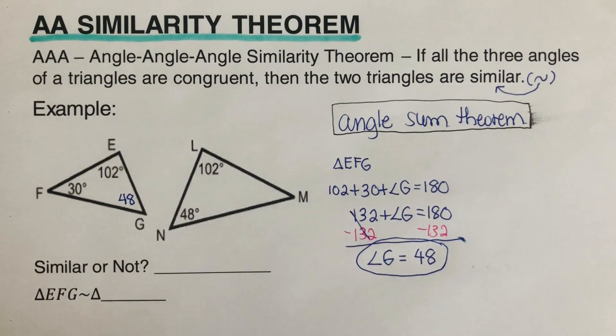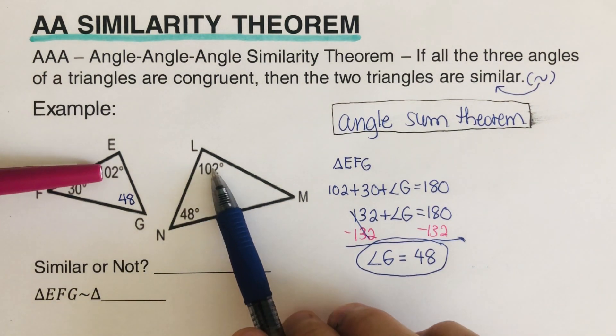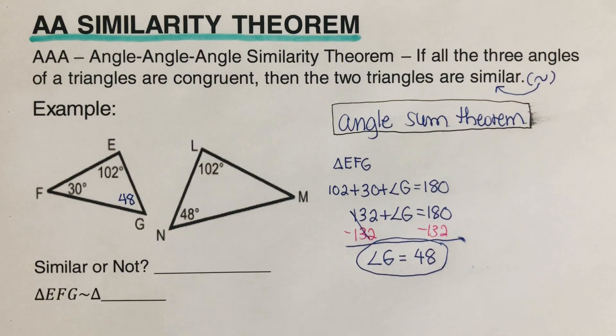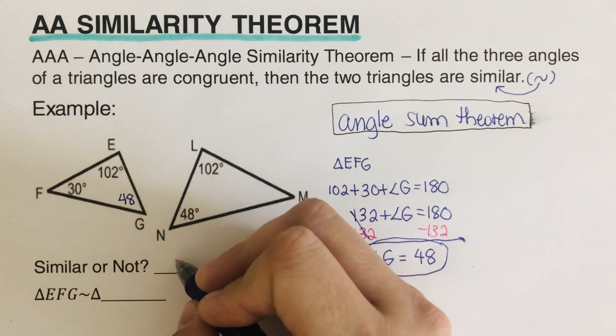Do we have two angles that are the same now? So we have 102 and 48. So therefore we can go ahead and say that these two triangles are similar.